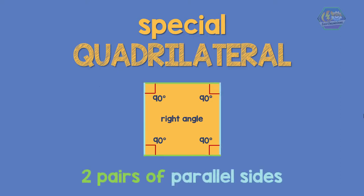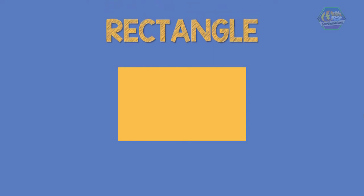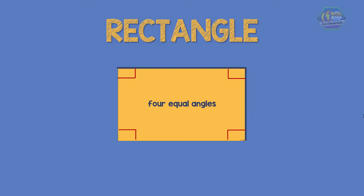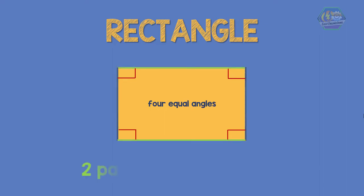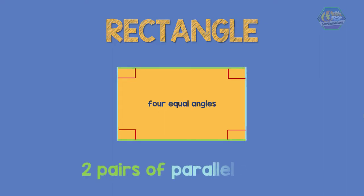Also, a square is formed by two pairs of parallel sides. Let's have another example of a quadrilateral. A rectangle is also a type of quadrilateral. A rectangle has four equal angles but does not have four equal sides. Also, a rectangle is formed by two pairs of parallel sides.